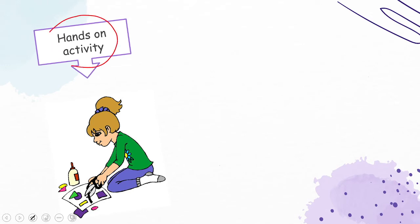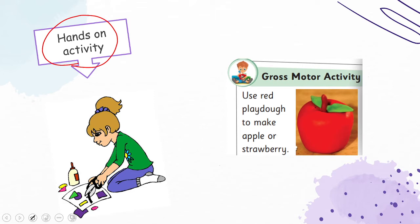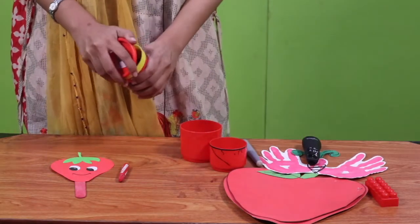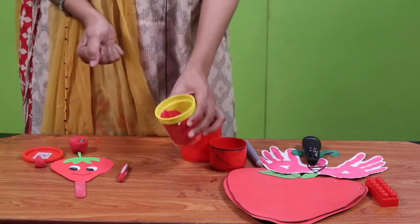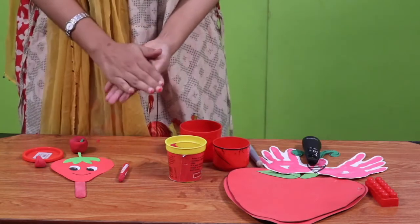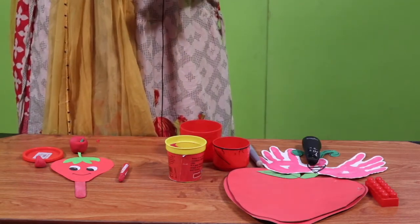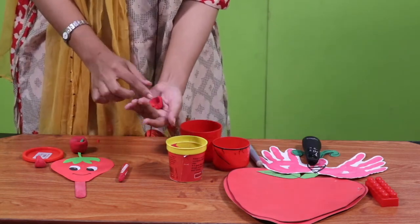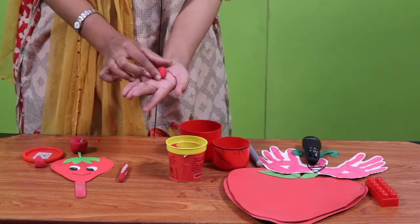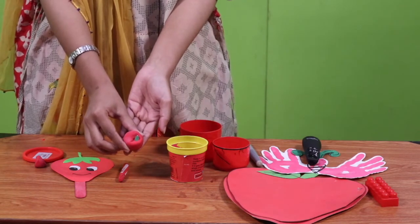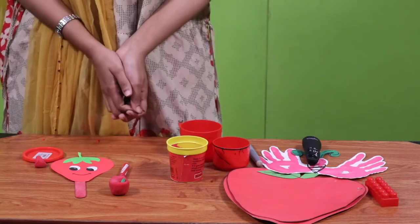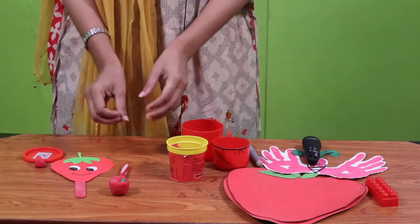Now we have a hands-on activity. We will use red play-doh to make an apple or strawberry. I hope your teacher has given you a piece of red play-doh. Let me quickly make a red apple for you. Take a chunk of play-doh and roll it in your hand. Then poke it and add a small petal on top. Your apple will be ready. I have made this red apple for you — you can make a big apple or small apples as per your teacher's instruction.